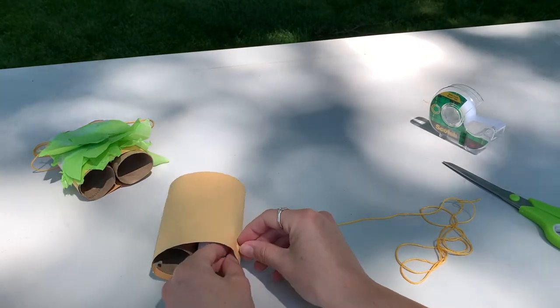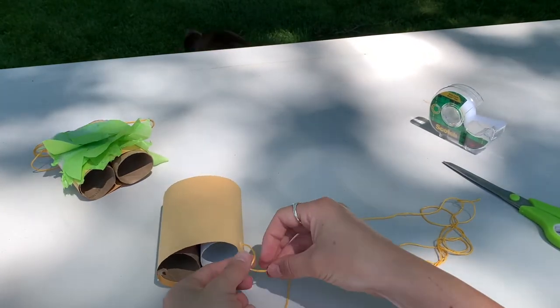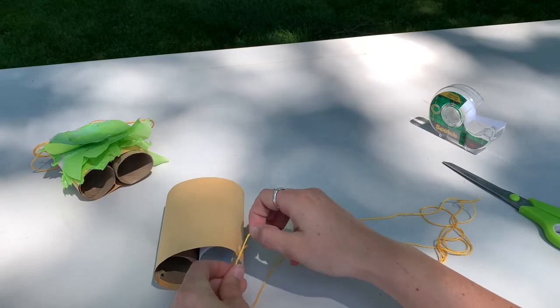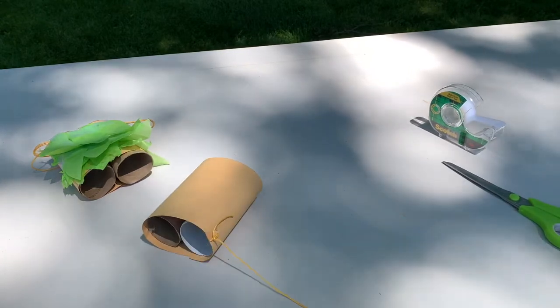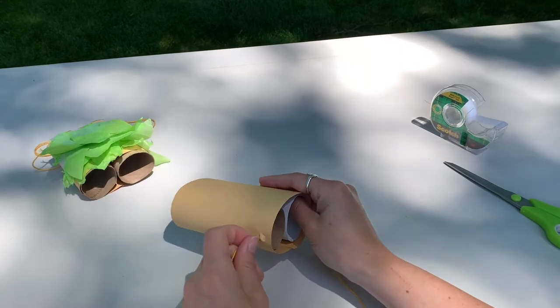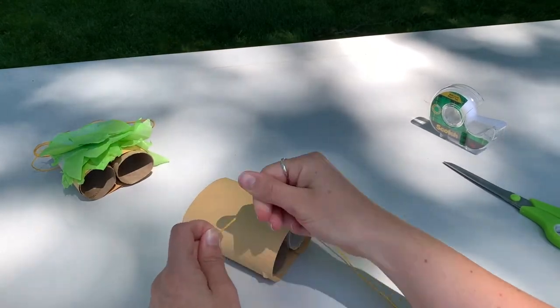Alright, and then we're going to put the string through each hole. And that way you can wear your binoculars and you can wear it around your neck, go around your backyard for your backyard safari and find a bunch of different stuff and you won't have to worry about losing them.